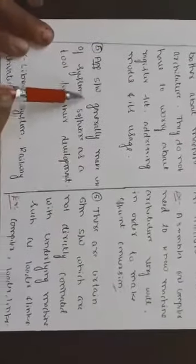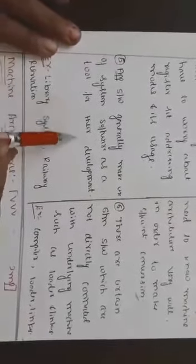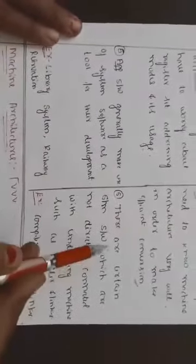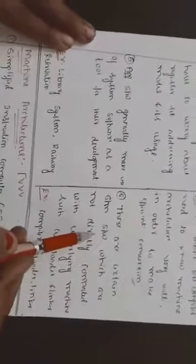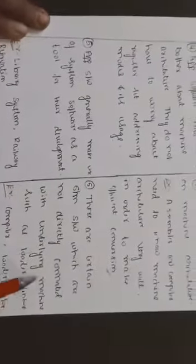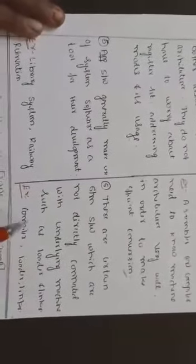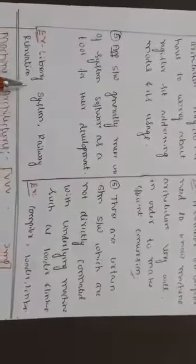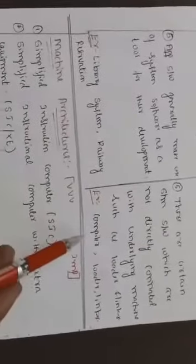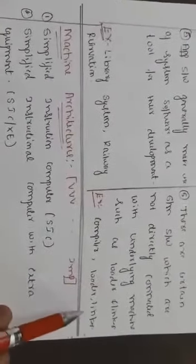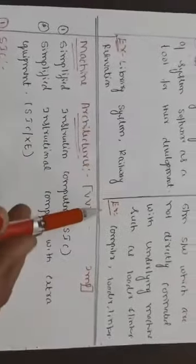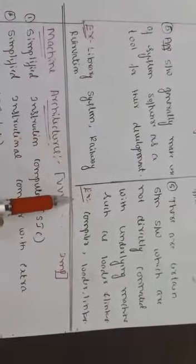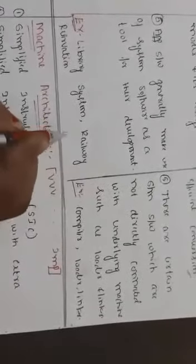Application software generally makes use of system software as a tool for their development. There are certain system software which are not directly connected with underlying machine such as loader and linker. Examples for application software: library system, railway reservation. Examples for system software: compiler, loader, linker, assembler. Don't forget to write examples in the exam, they carry one mark.